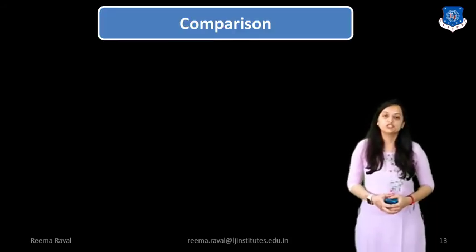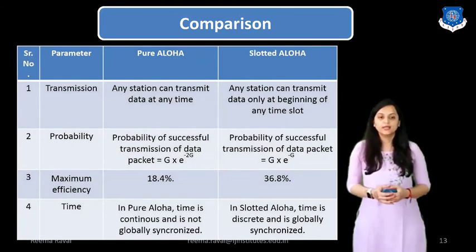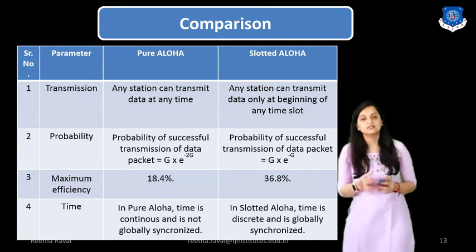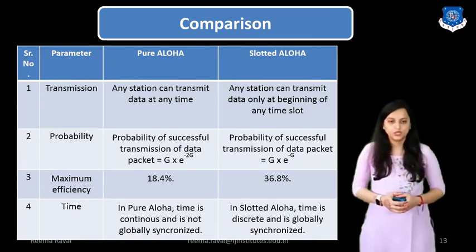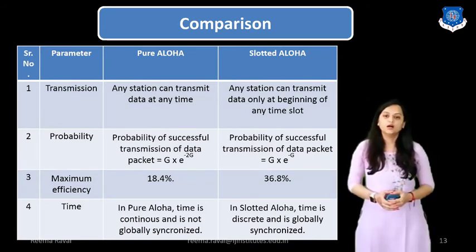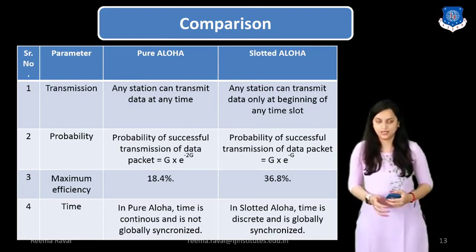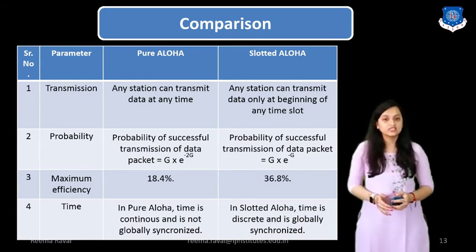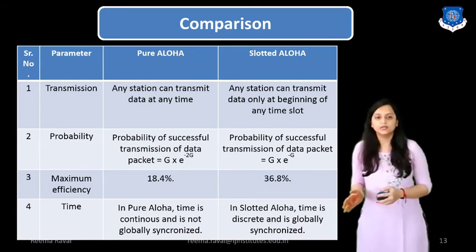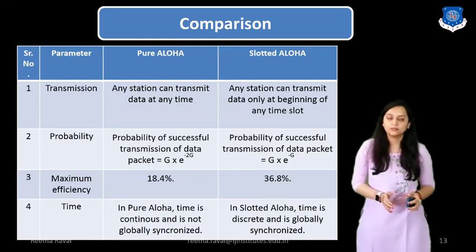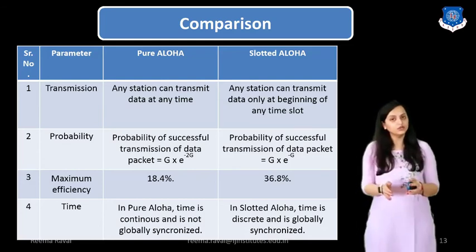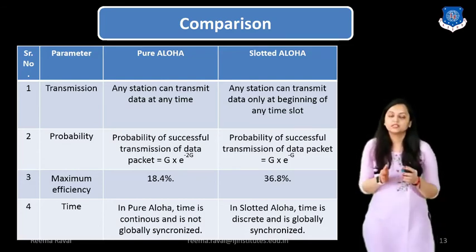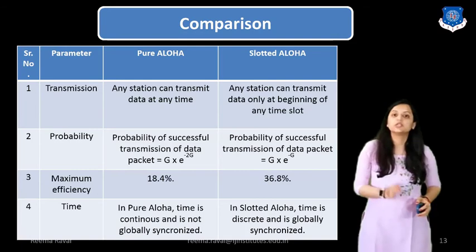Let us see the comparison between Pure ALOHA and Slotted ALOHA. Considering the transmission parameter: in Pure ALOHA, any station can transmit data at any time. Whereas in Slotted ALOHA, any station can transmit data only at the beginning of a time slot — data transmission takes place only at the allotted time slots.